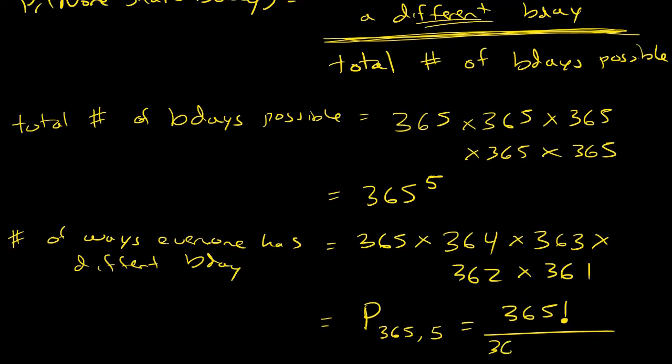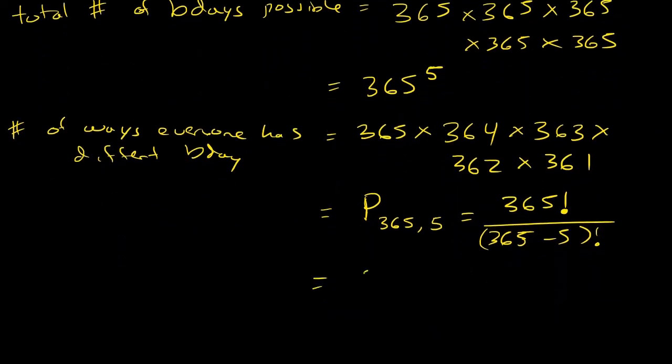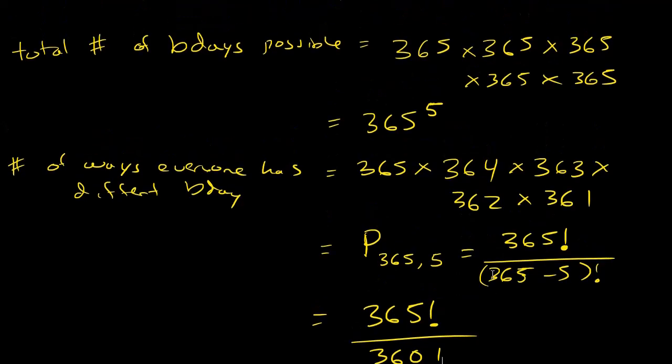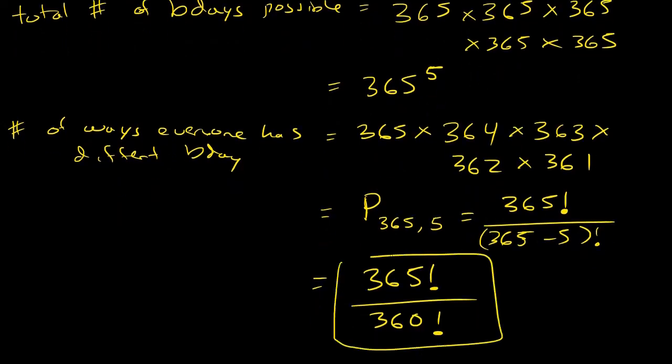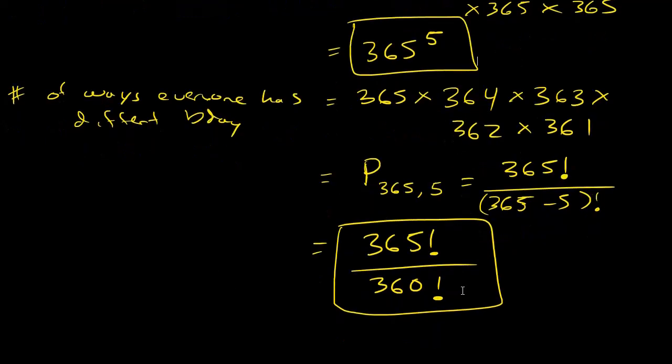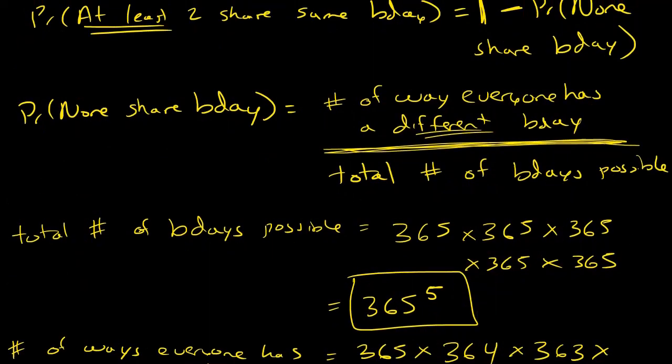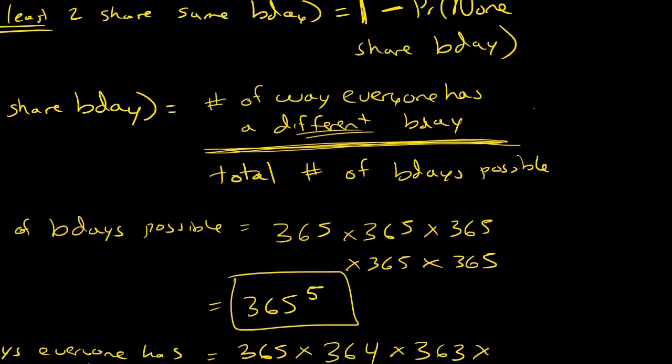We would use a computer to calculate this for us. So now I have the numerator and the denominator, so I can plug that in. Let me scroll back up here and scroll over. What do I have? This equals P(365,5) divided by 365 to the fifth power.